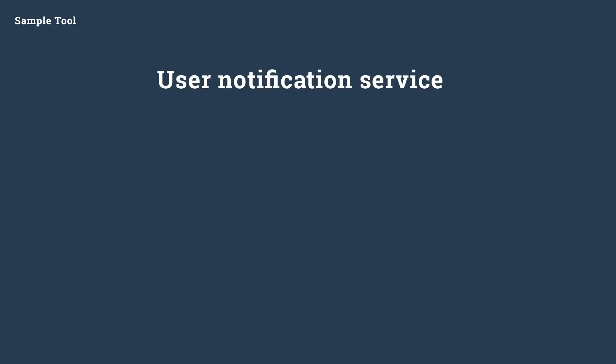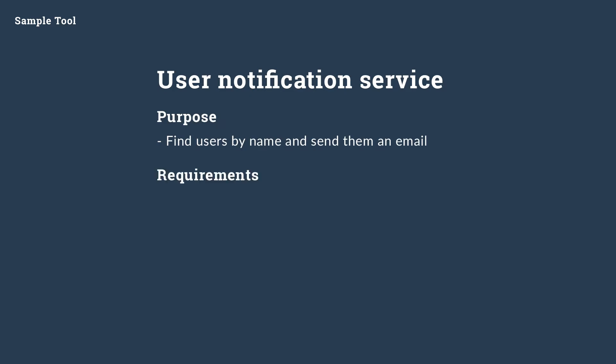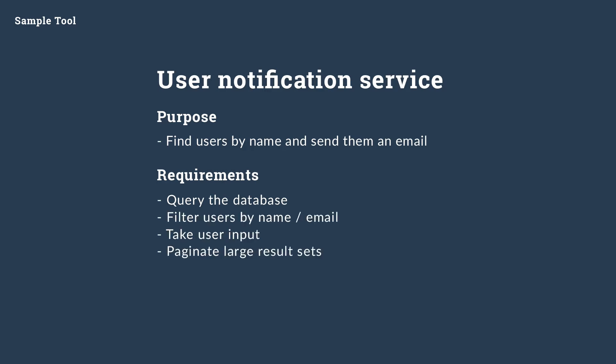Perhaps something broke in production and we need to find users by name and send them an email. For this tool we'll need to do several things: query the database, filter users by property, take user input, paginate large result sets, toggle previewing and running the action, send the actual emails, and view results.